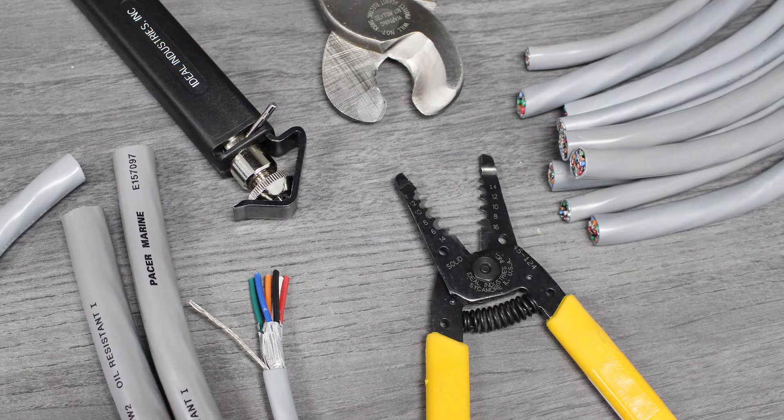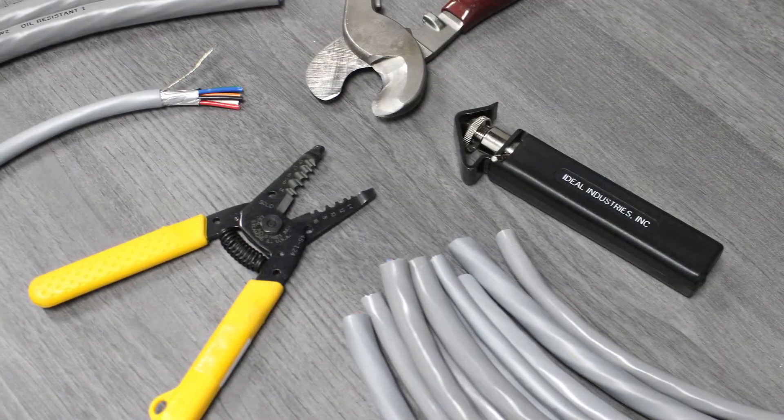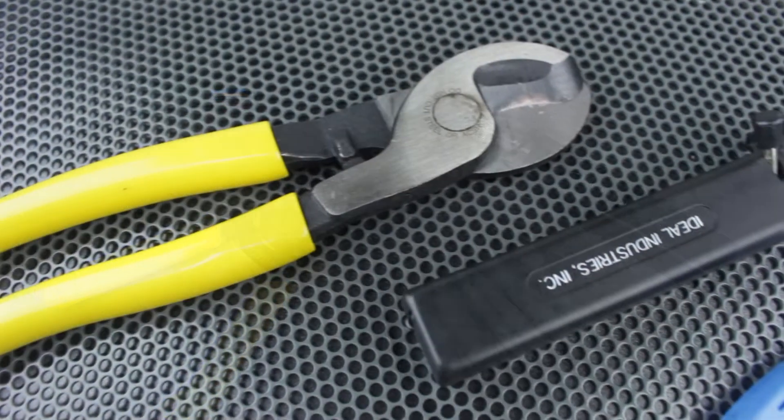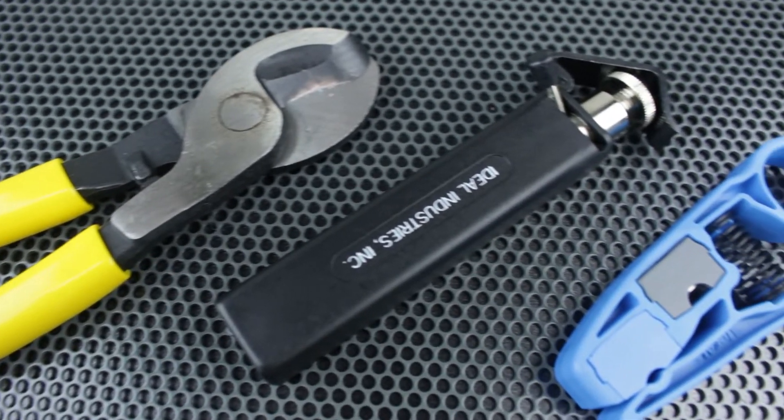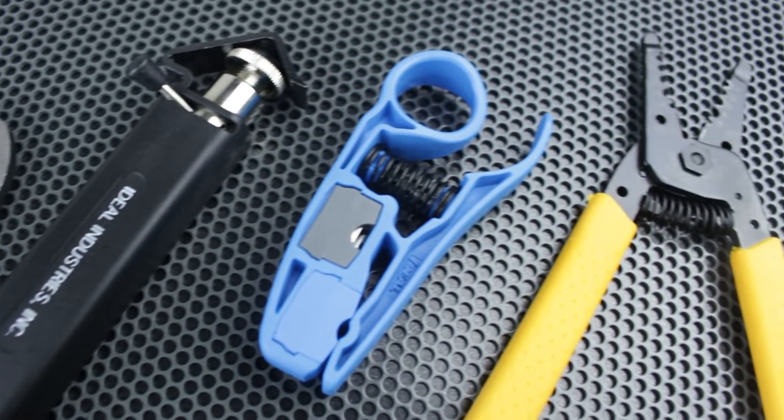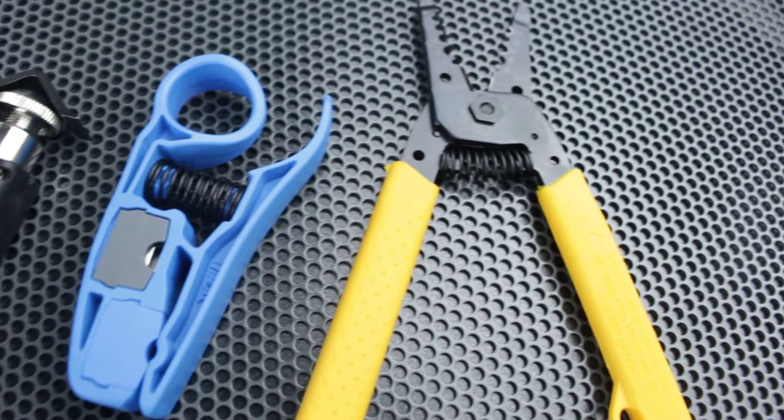Whether in field service or a private garage, stripping shielded multi-conductor cable requires using the proper tools. For this project, we'll be using three types of tools that we use in our production facilities: a cable cutter, a ring slit tool, and a compact wire stripper.